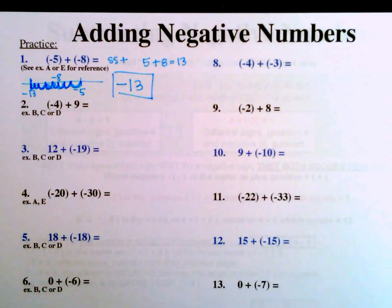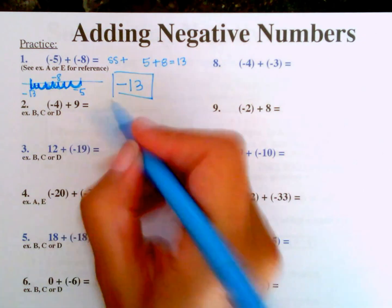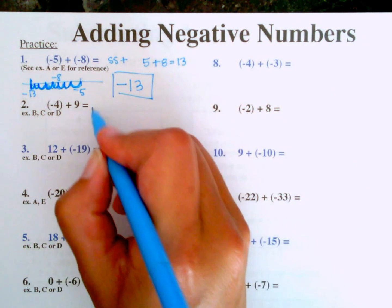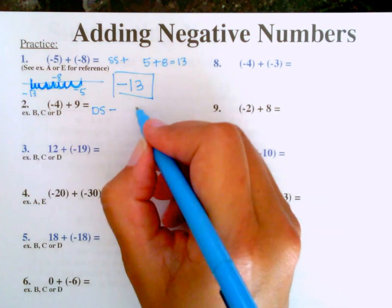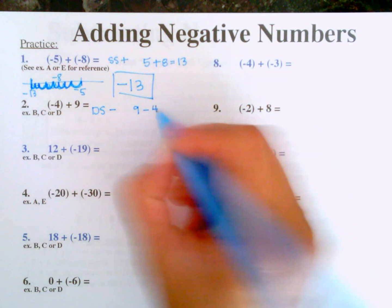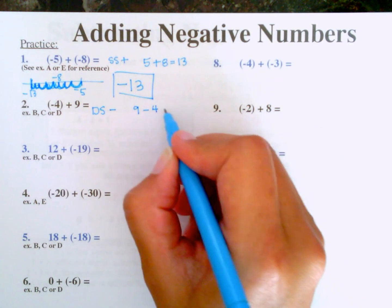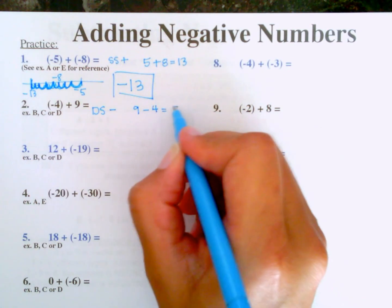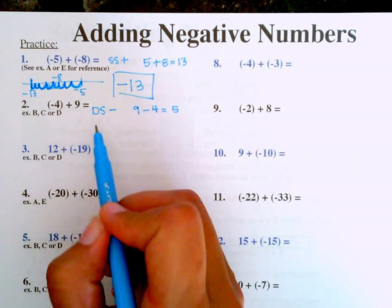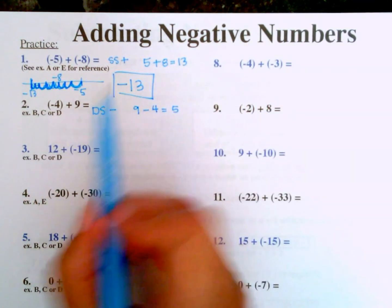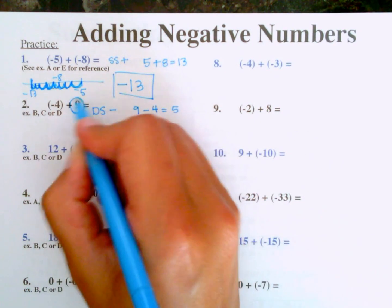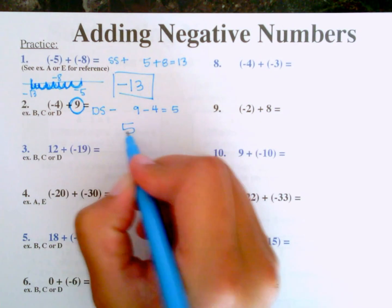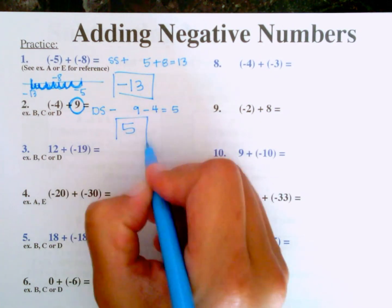Number 2: negative 4 plus 9. Different signs, so we subtract. 9 minus 4 — always larger minus smaller — equals 5. The larger number, 9, is positive, so the answer is positive 5.